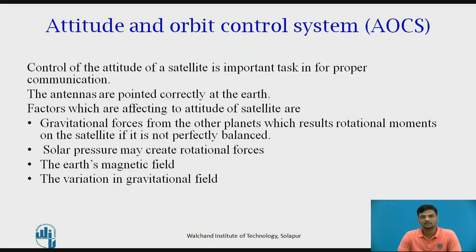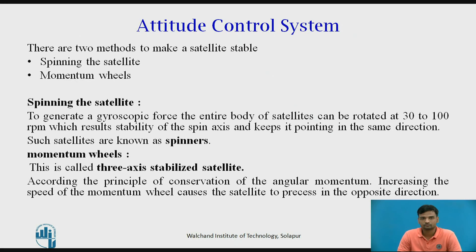Control of the attitude of a satellite is necessary so that antennas, which often have narrow beams, are pointed correctly at the earth. Gravitational forces from the sun, moon and planets will set up rotational moments on the satellite if it is not perfectly balanced. Solar pressure acting on the satellite antenna, satellite body and solar cells may also create rotational forces. The earth's magnetic field can produce forces on the satellite if there is a net magnetic moment. As the satellite moves around the earth, these forces vary cyclically through a 24-hour period, causing nutation of the satellite which must be damped out mechanically. Variation in the gravitational field causes not only attitude change but also acceleration that can change the satellite's orbit.